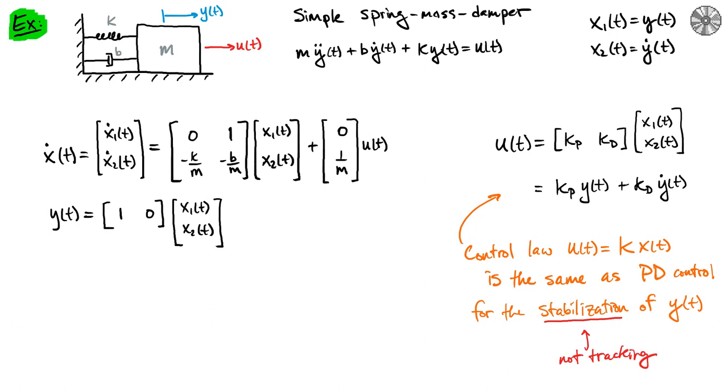To see an example of this we will go back to our spring mass damper and so again we have our state space equations that we derived in past classes. And if we design a controller that's u equals K times x, then our K is a matrix and our x is a state.